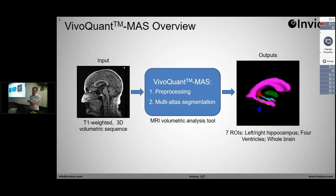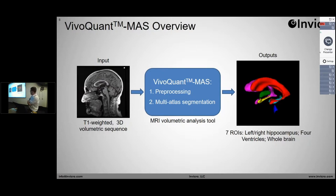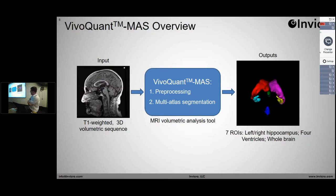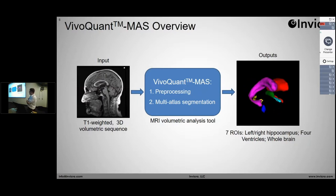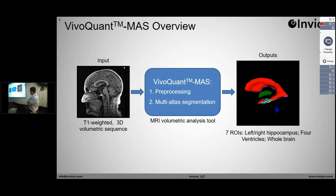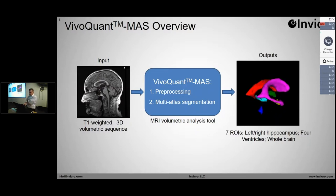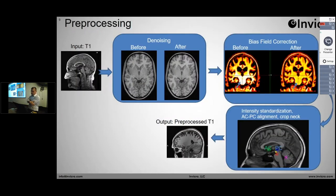At a high level, we have an input T1-weighted 3D volumetric data set. We're going to go through a pre-processing step — Gabe hit on a couple of the functions in place for that — and then a multi-atlas segmentation. You can see some example ROIs on the right. That pre-processing comes down to the importance of data harmonization. I think Gabe showed images at the top — that was a collaboration between CoreLab analysis and software to say, these are pieces of the pipeline that we use to pre-process data that really improve our robustness. Can we work together to integrate them natively into VivoQuant?